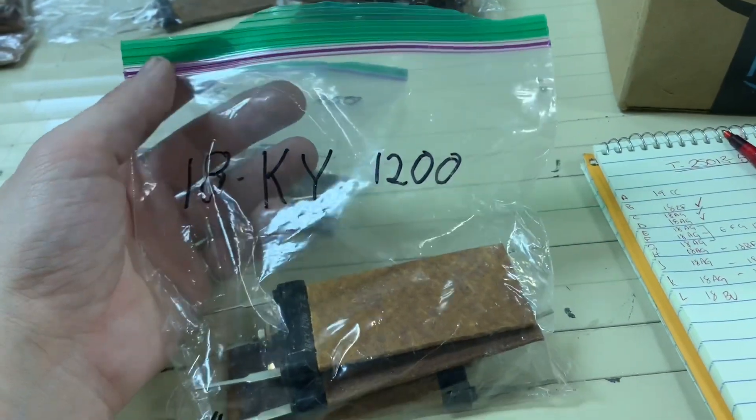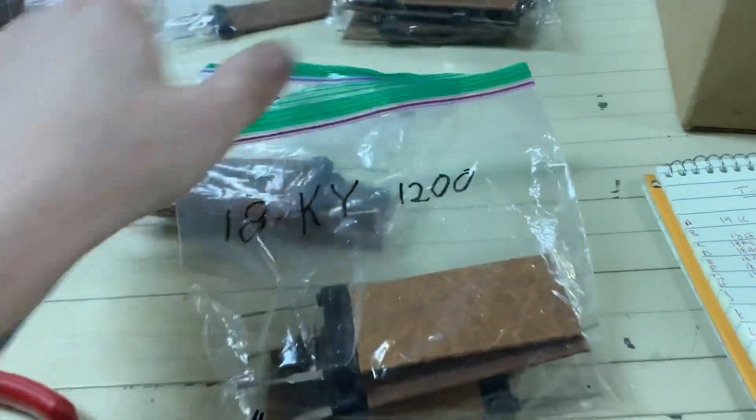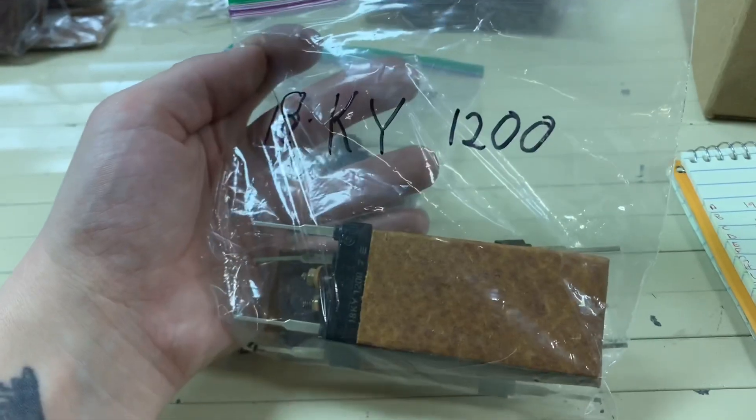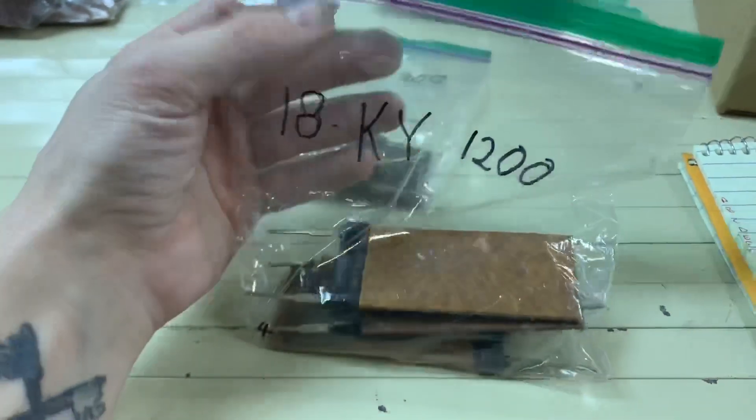Okay, so we needed 1280 ohms for this resistor. We don't have that one. So we have 18ky which is 1200 ohms. And at only 80 ohms of difference, I'm going to make the executive decision to say this is the resistor we're going to put there.